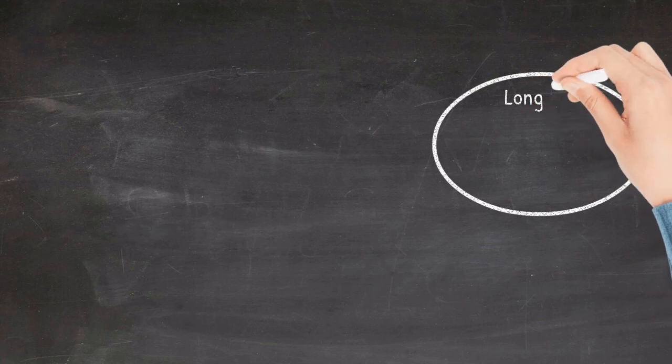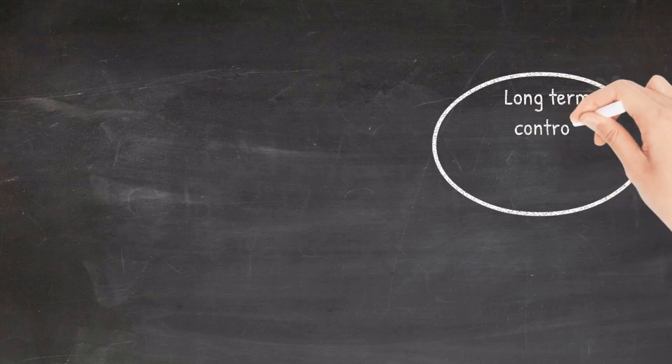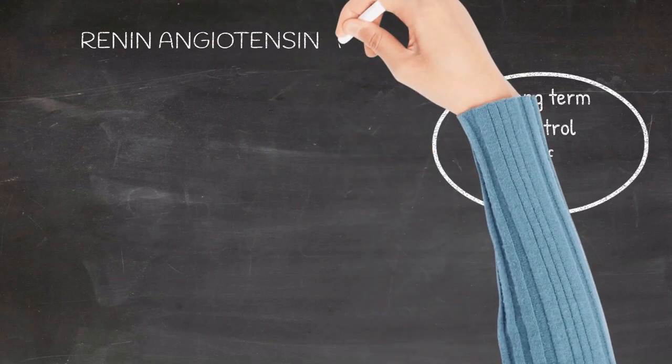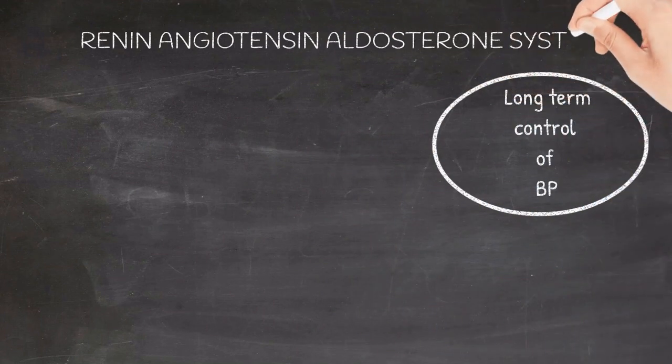So this is how the baroreceptor reflex helps in moment-to-moment control of the blood pressure. Now we look into something that is responsible for long-term control of the blood pressure: that is the renin-angiotensin-aldosterone system.